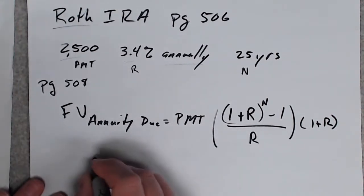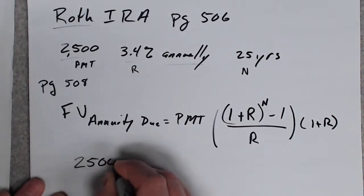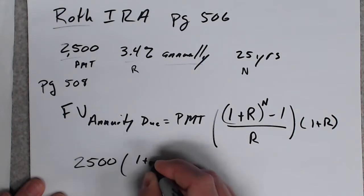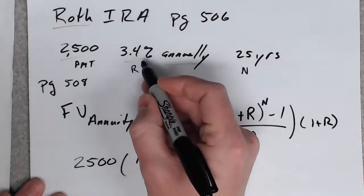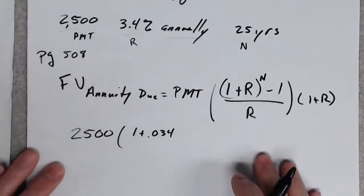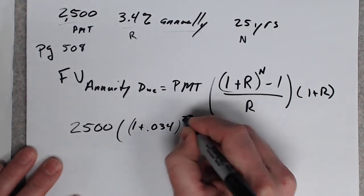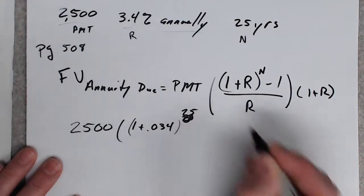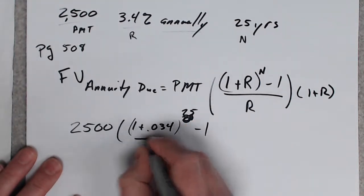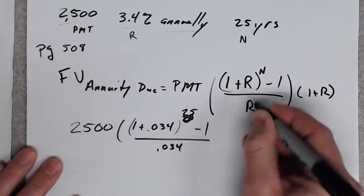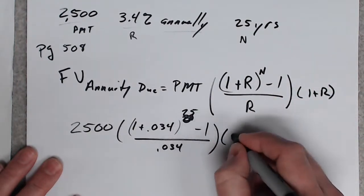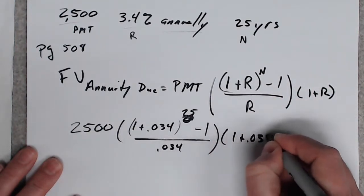So, for this question, it's simply just plug and chug. 2500, 1 plus .034. We'll convert that to a decimal. 25 would be my N. Let me write 25. Minus 1. All over .034. I'm just filling in the numbers here. 1 plus .034.